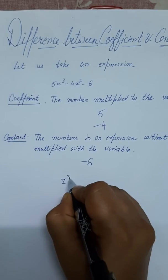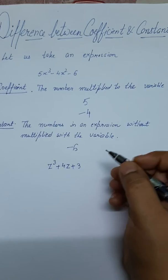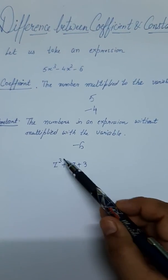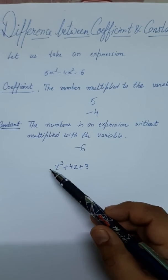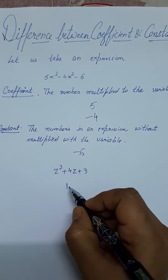Suppose we take another example: z³ + 4z + 3. In this, the leading coefficient, which means the highest power variable, has a coefficient of 1. The leading coefficient will be 1.